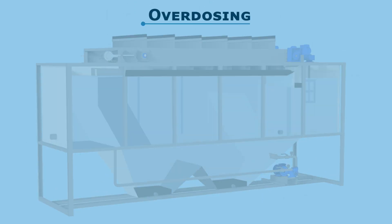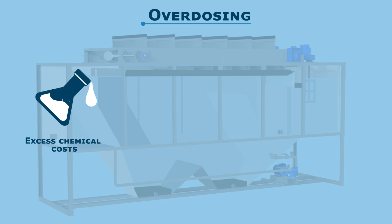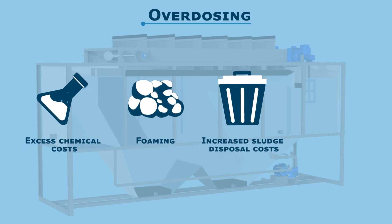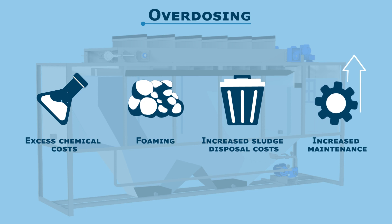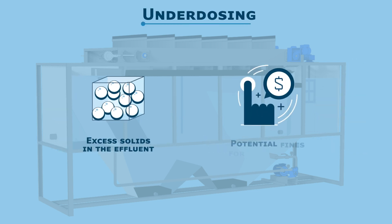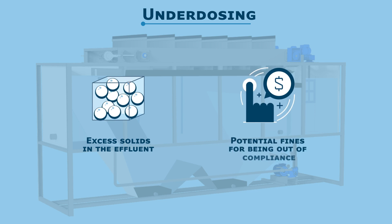Overdosing leads to excess chemical costs, foaming, increased sludge disposal costs, and increased maintenance. Underdosing leads to excess solids in the effluent and potential fines for being out of compliance.